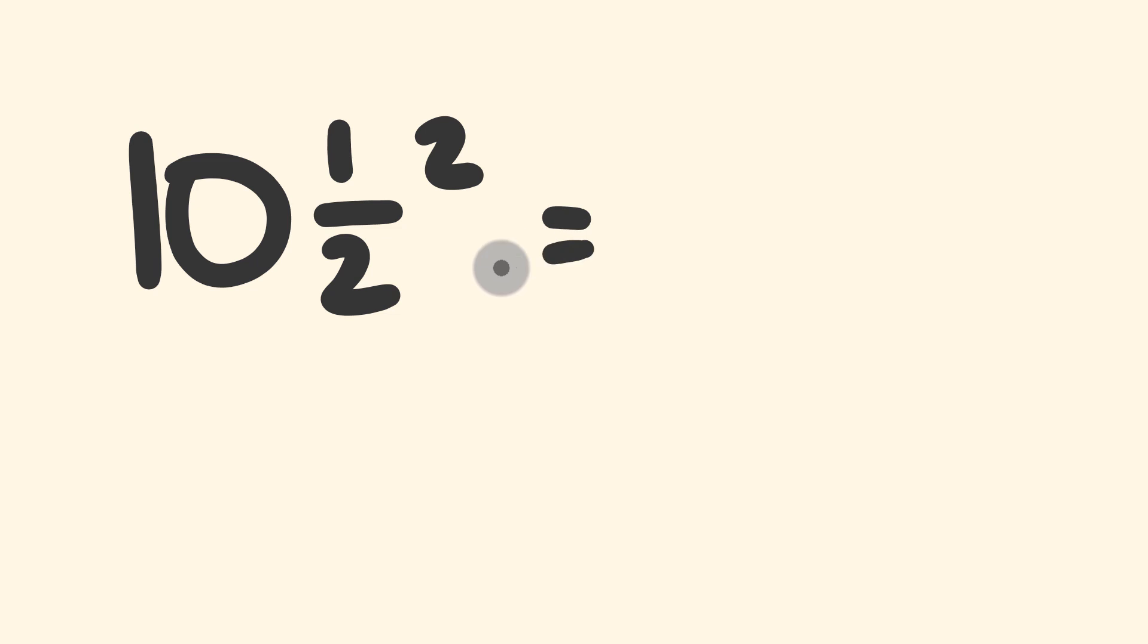Now this trick involves the squaring of mixed numbers, specifically squaring mixed numbers that have this half on the end here. So 10 and a half multiplied by 10 and a half.